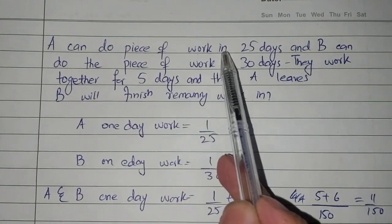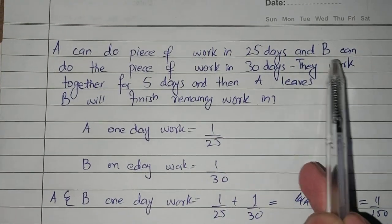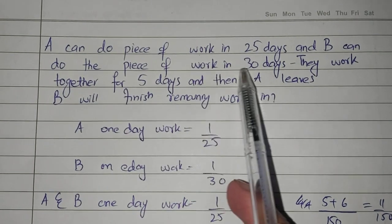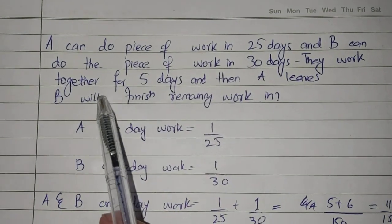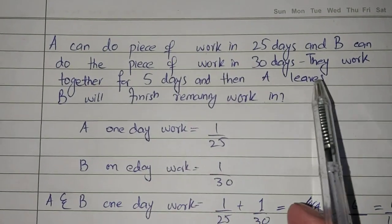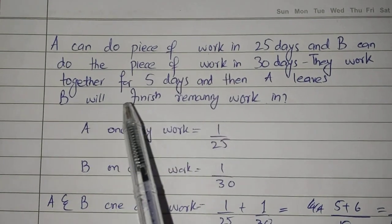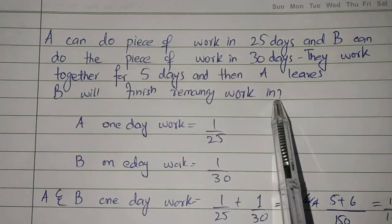A can do a piece of work in 25 days and B can do the piece of work in 30 days. They work together for 5 days and then A leaves. B will finish the remaining work in how many days?